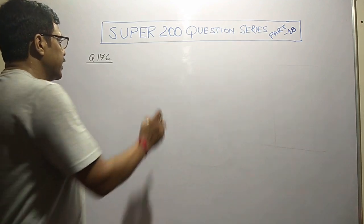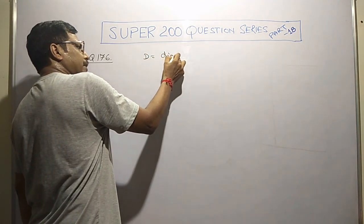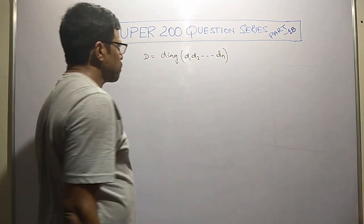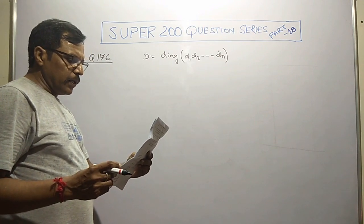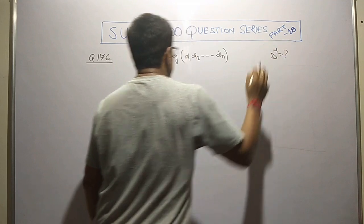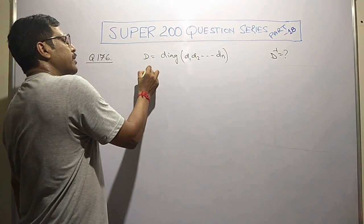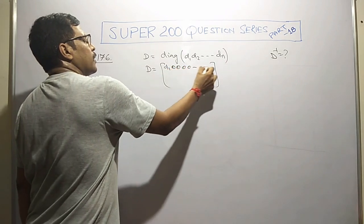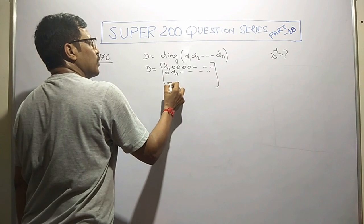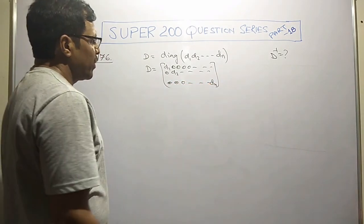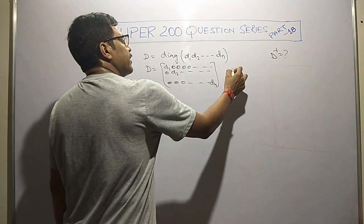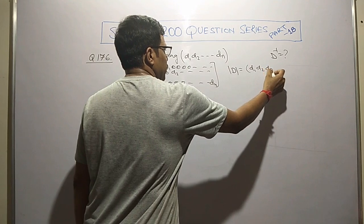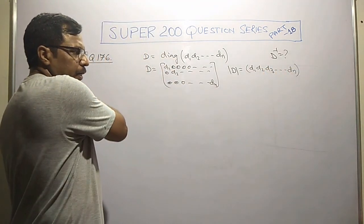Question number 176. We are given that d is a matrix which is diagonal in nature, and the diagonal elements are d1, d2, d3 up to dn. We are demanded to find the value of d inverse. If we write this matrix d in rows and columns, it would be: d1, all zeros; 0, d2, all zeros; and the last one 0, 0, 0, dn.